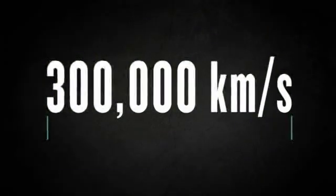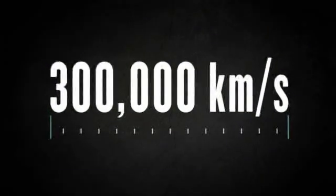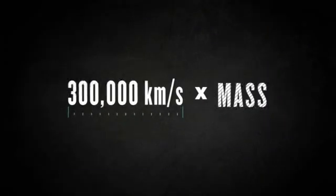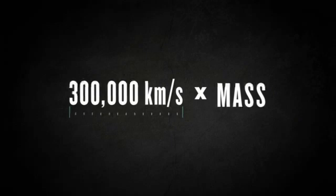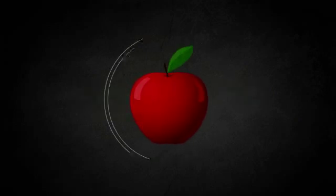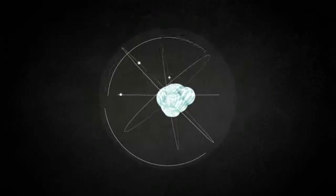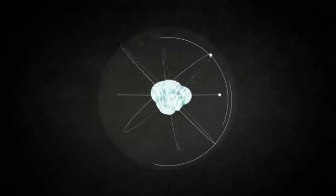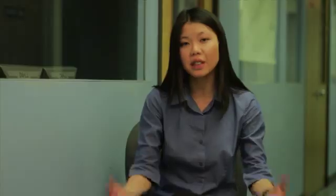Light travels at approximately 300,000 kilometers per second. With a number this large multiplied by mass, you can easily see how something small like an apple or even an atom can contain a lot of energy.